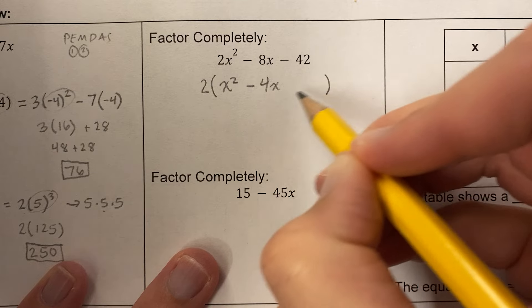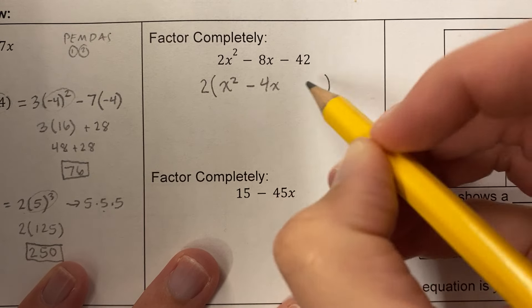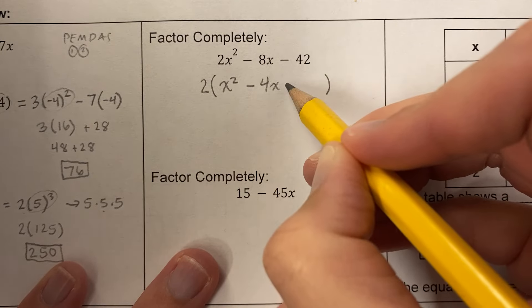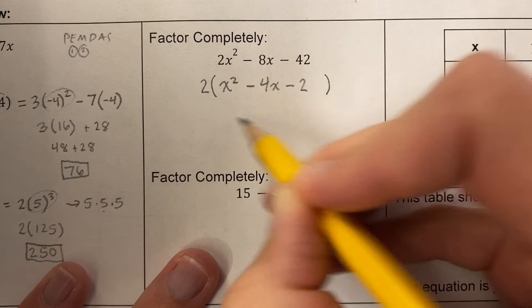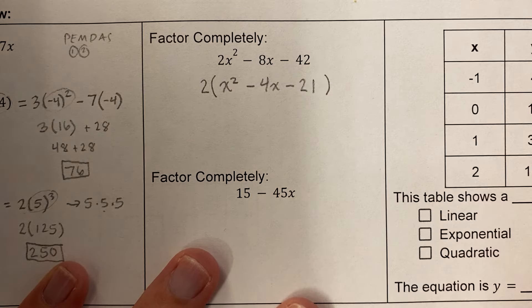And if you're struggling with this, you can just grab a calculator and do 42 divided by 2. Or you can ask yourself, 2 times what is 40? Oh, that's 20. 2 times what is 2? Oh, that's 1.